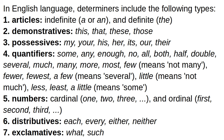Determiners include the following types. The first type is articles: indefinite articles 'a' or 'an,' and definite article 'the.' Then demonstratives: this, that, these, those. Then possessives: my, your, his, her, its, our, their. Quantifiers: some, any, enough, no, all, both, half, double, several, much, many, more, most, few, fewer, fewest, a few.